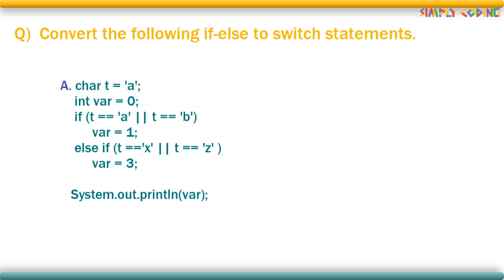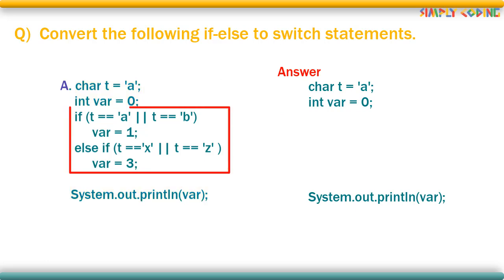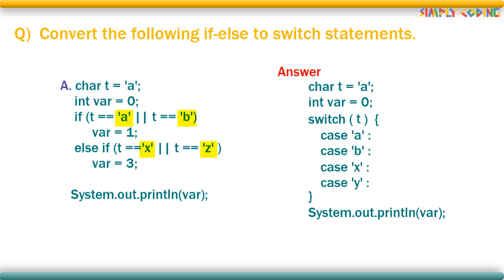Now we will see some conversion questions where you are asked to convert if else to switch. To solve such questions, first whatever is given before if or after if, any declaration or initialization of variables, print statement, will be copied as is in the answer. Now we will pick up the if statement. You will focus on all equality statements which are there in the if block. There are 4 over here and you see there is a common variable t which is compared with 4 different values. So you will first write the switch statement with this common variable and put it in the curly bracket. Now the 4 values with which it was compared with will form the 4 case statements. So write 4 case statements and do not forget the colon.